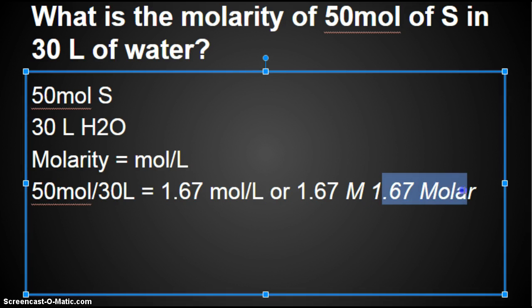You could write it as 1.67 capital italicized M, or you could say it's 1.67 molar. Personally, I think 1.67 moles per liter is the easiest way. But you can also use the capital italicized M, and you can use the word molar.